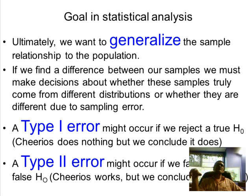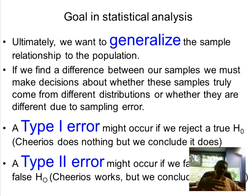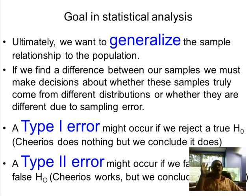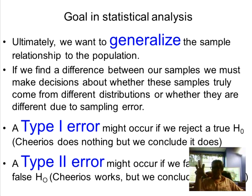You look at whether the obtained Z-score from your sample of Cheerios eaters falls in the region of rejection or not, and then you make a decision about rejecting the null or failing to reject the null.